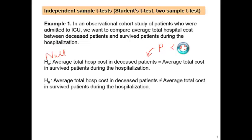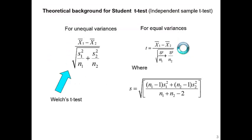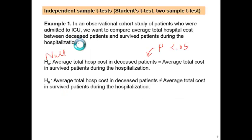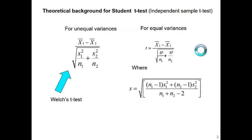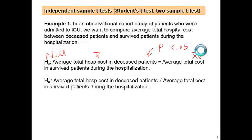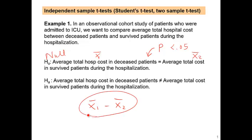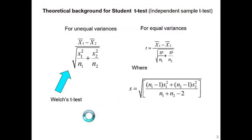The t-test compares averages. X1 is average total hospital cost in deceased patients. X2 is average total hospital cost in survived patients. The null hypothesis says these two are the same. We want to show the difference between these two is not zero. The t-test compares the difference between two averages. This is the formula of a t-test.